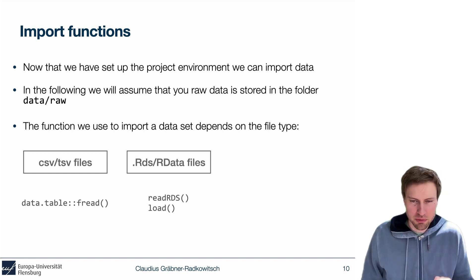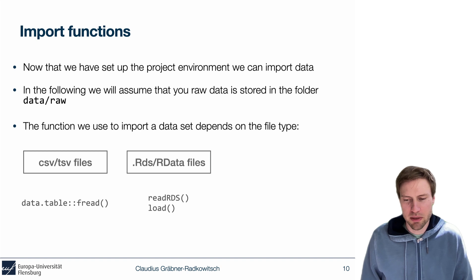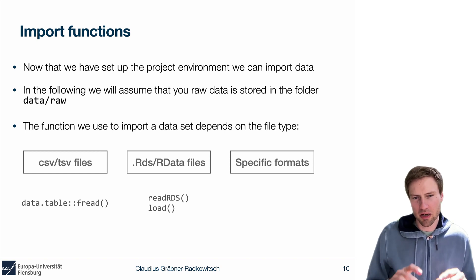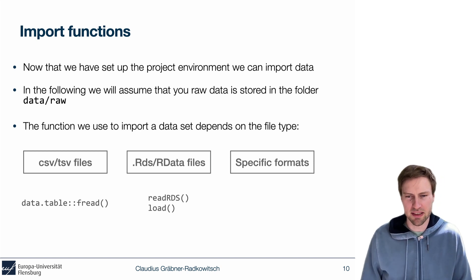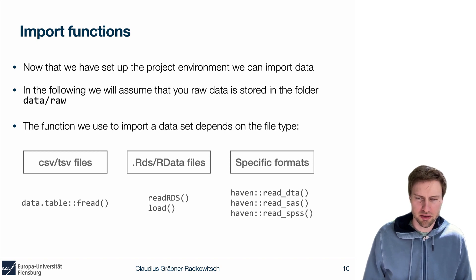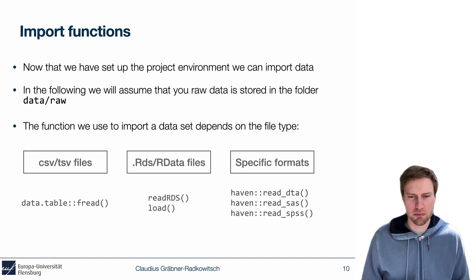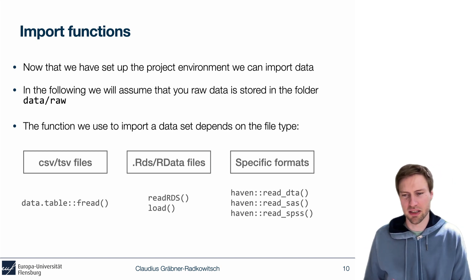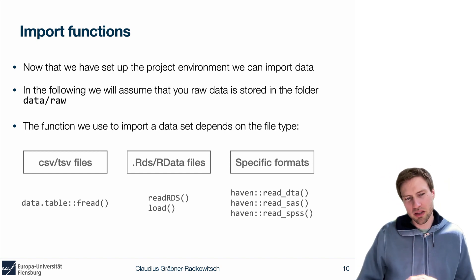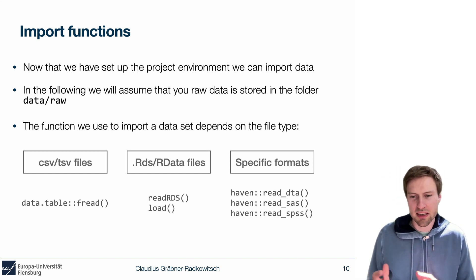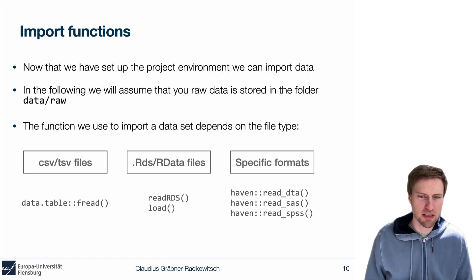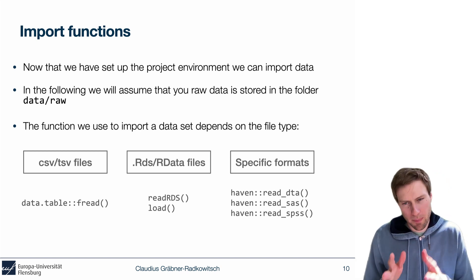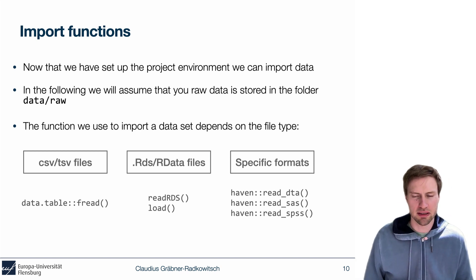You might collaborate with people who use more conventional statistics platforms like SPSS or Stata. They all have their specific file formats, and the good thing is R has functions to read and write this data as well. In particular, there's the package Haven, which provides functions such as read_dta for Stata files, read_sas for SAS files, and read_spss for SPSS files, along with corresponding write functions. Whenever you work closely with people using these software packages, it's a good idea to look at the Haven package.